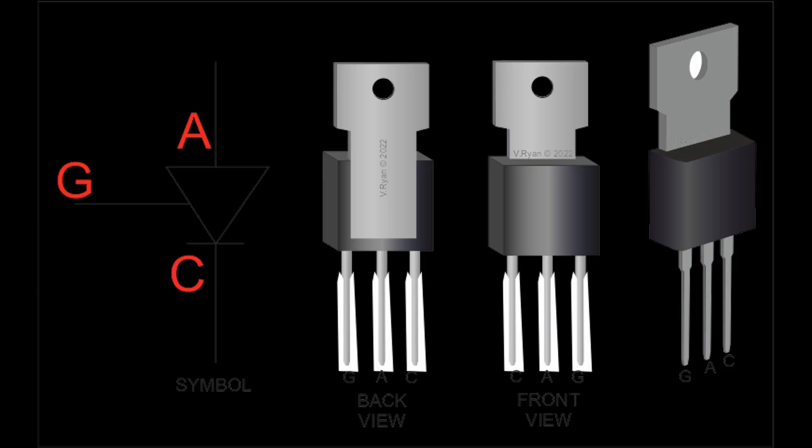The device will continue to conduct until the anode current drops below a certain threshold known as the holding current. Reverse blocking mode: when a negative voltage is applied to the anode with respect to the cathode, the thyristor remains off, as the J1 and J3 junctions are reverse biased.